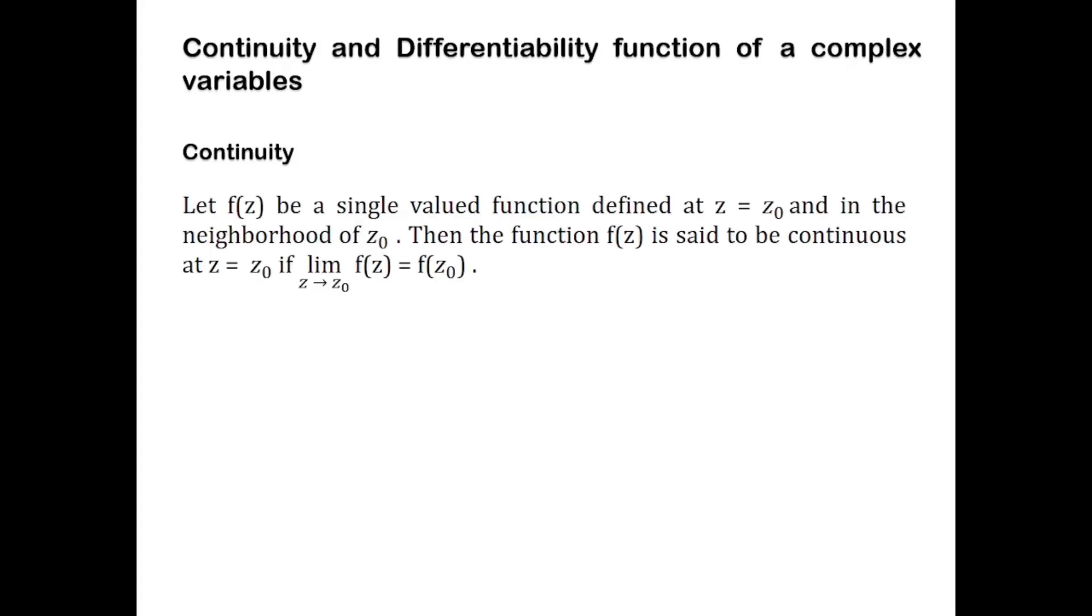You can check on those statements as below. We say that a function of a complex variable is continuous at point z = z₀ if the limit of f(z) as z tends to z₀ is equal to f(z₀).